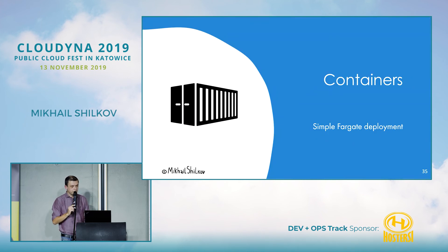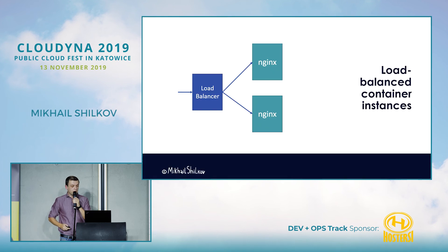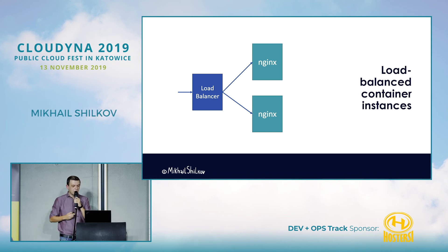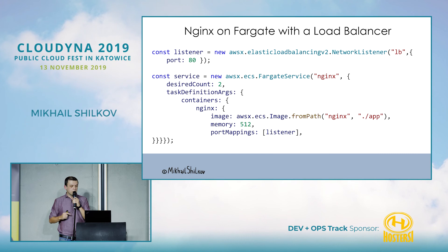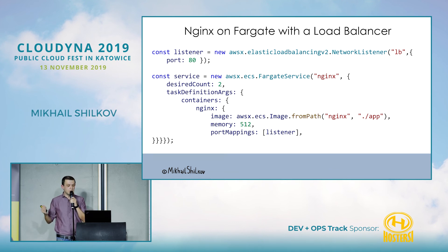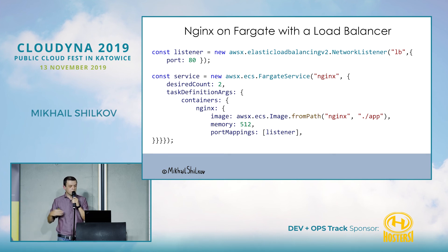Next example: containers, specifically Fargate on AWS. If I want to deploy Fargate, it tends to be quite low-level — I have to define load balancers, ports, bindings, permissions. In code, though, it can be quite simple: I define a load balancer in one line, then declare a Fargate service with a desired instance count and a pointer to a container image — that's all that's required. A lot of defaults and assumptions. If I need to, I can override the low-level properties, but I can also use high-level constructs.